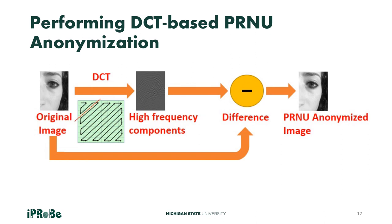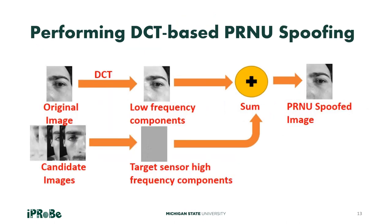We perform two tasks. The first is known as DCT-based PRNU anonymization, in which the high-frequency PRNU components are suppressed such that the output is a PRNU anonymized image that can be assigned to any random sensor other than the source sensor. The second task is known as DCT-based PRNU spoofing, in which we deliberately insert the high-frequency components of a target sensor, thereby resulting in PRNU spoofing.